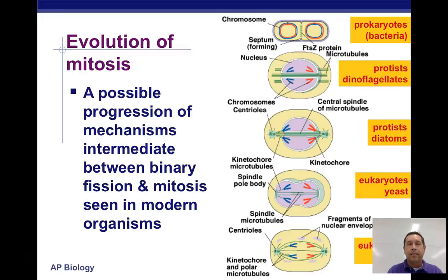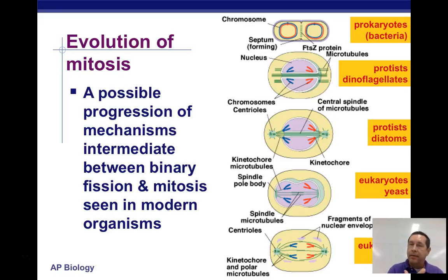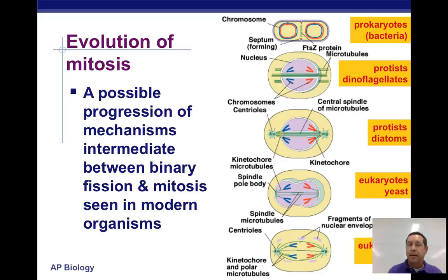A possible progression of the mechanism — the intermediate between binary fission and mitosis — is seen in some modern organisms. Some protists, like flagellates, diatoms, and yeast, appear to have some kind of intermediate process happening. And then in more complex eukaryotes, like animals, you have the full mitosis that we typically think of.